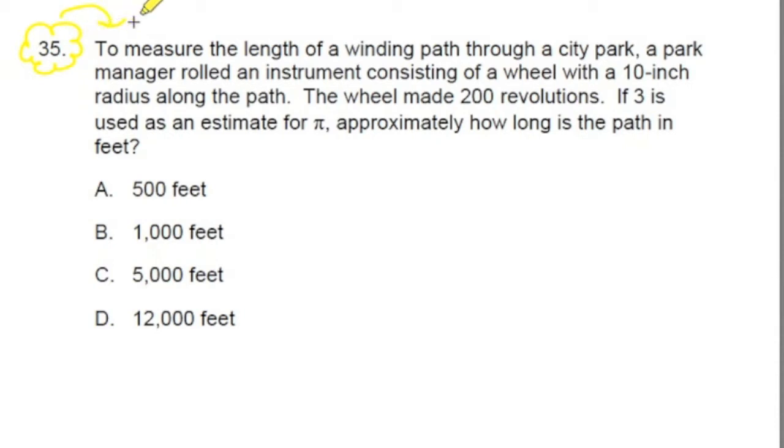It says, to measure the length of a winding path through a city park, a park manager rolled an instrument consisting of a wheel with a 10-inch radius along the path. The wheel made 200 revolutions. If 3 is used as an estimate for pi, approximate how long is the path in feet?